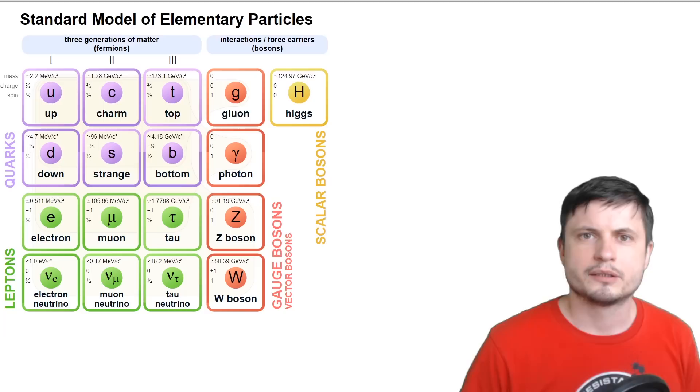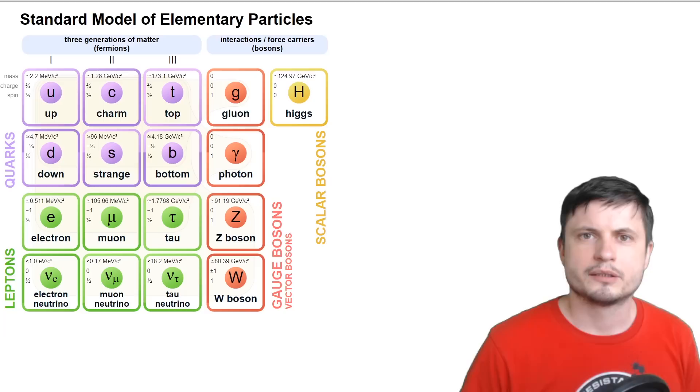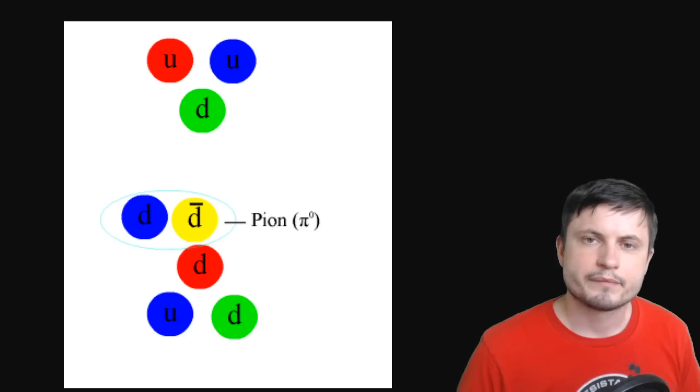So first of all, there are quite a lot of different subatomic particles, and some of them end up creating larger particles that we're more familiar with, like proton and neutron.